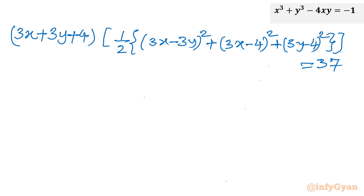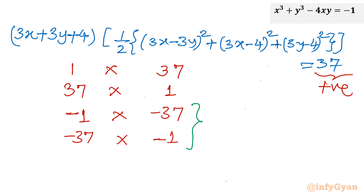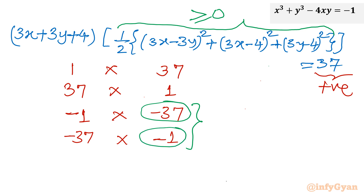Now let us conclude through prime factorization. I will write 37's factors as 1 times 37, or 37 times 1. As 37 is a prime number, we can also have both numbers negative — negative times negative is positive — so minus 1 times minus 37, and minus 37 times minus 1. These are the four possible factorizations. Now from these four, we will reject the ones where the second bracket is negative, because it is always positive as it is a sum of squares. So minus 37 and minus 1 cases are rejected.